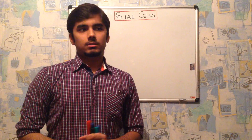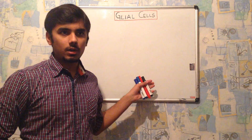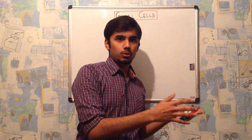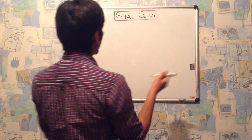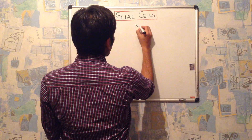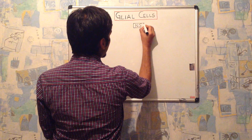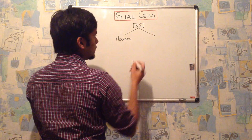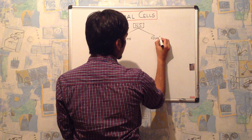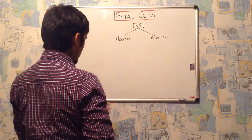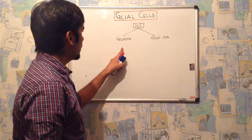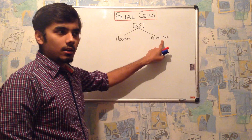Hi everyone. Today we will be discussing the second part of neuroanatomy. In the previous video we discussed the first part, where we mainly talked about neural cells. There are two types of neural cells: neurons and glial cells. In the previous video we discussed the structure, types, and functions of neurons. Today we will be mainly focusing on glial cells. There are mainly five types of glial cells.